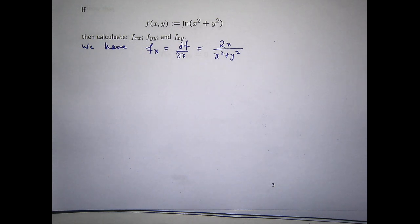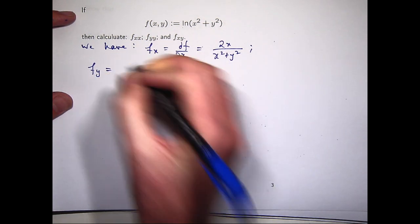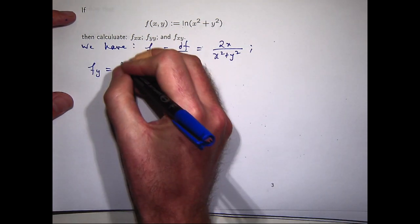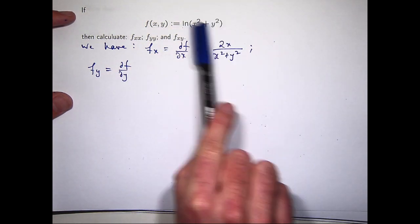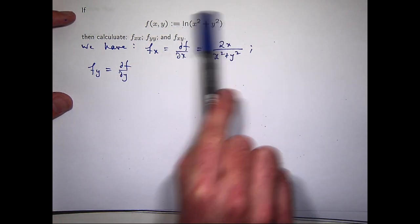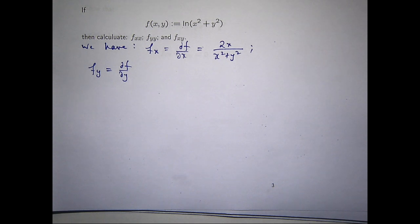You could use the chain rule there if you wanted to, but I don't think it's necessary. It's similar with df/dy or f sub y: take the partial derivative with respect to y of what's in the brackets, bring it to the front, and then multiply by 1 on x squared plus y squared.